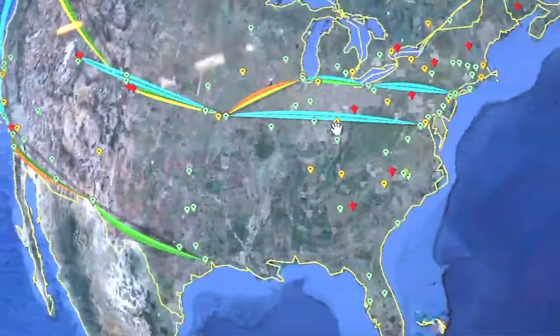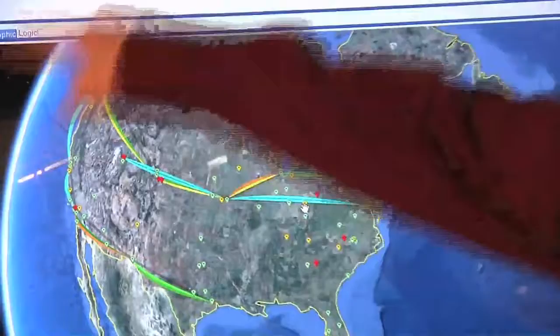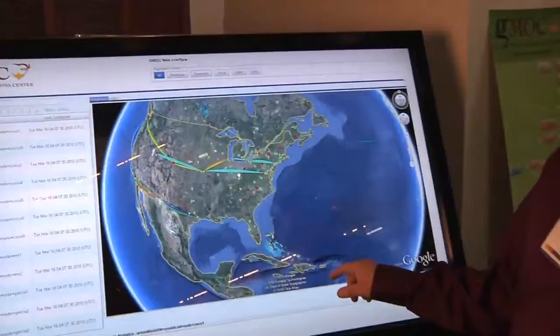So this is based on the Google Earth plugin and some custom code that we've written at GMoC to integrate Genie data into this. Basically what you're seeing on the outside here is all web browser, Firefox, Google Earth plugin on the internal piece. And we're using JavaScript events to communicate between the browser and the plugin.